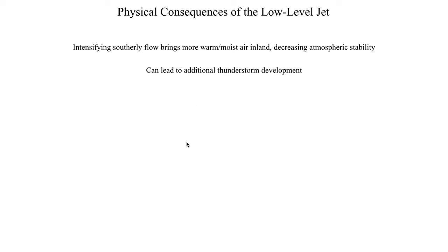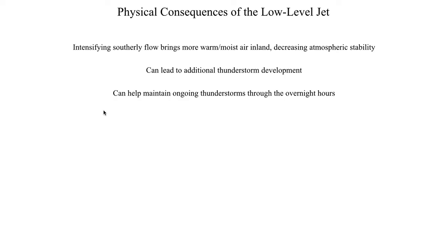This can lead to additional thunderstorm development and a very rapid increase in thunderstorm coverage as that warm and moist air infiltrates the lowest 1 to 2 kilometers of the atmosphere, very rapidly destabilizing it. It can even maintain an unstable atmosphere into the overnight hours despite surface cooling, by channeling warm moist air in from the Gulf. This plays an instrumental role in the development of mesoscale convective systems — large complexes of thunderstorms prominent in the plains partly because the low-level jet provides a continual supply of warm and moist air.